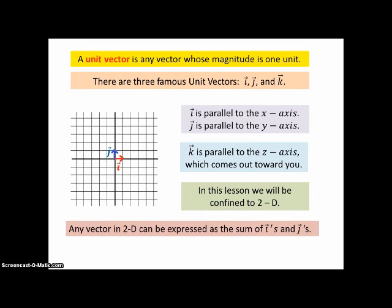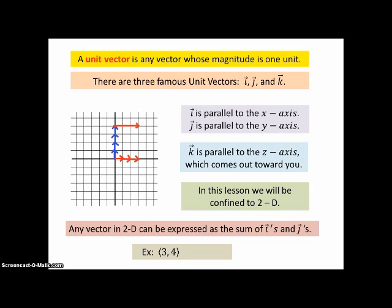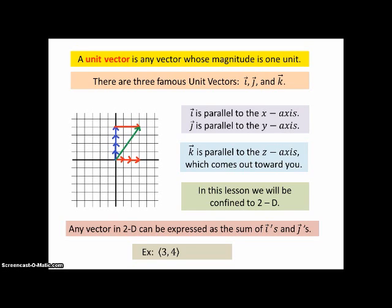Any vector in 2D can be expressed as a sum of i's and j's. For example, (3, 4) is 3 along the x-axis and 4 up the y-axis. So if we add those two together, we get the green vector. And in chevrons, that's (3, 4). And it's also equivalent to 3i plus 4j.